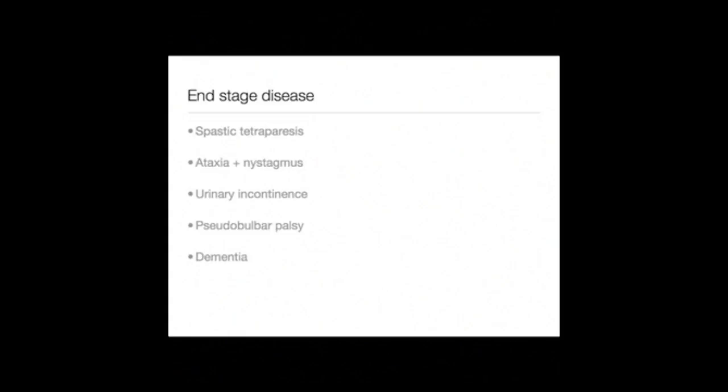In the patient with end-stage multiple sclerosis, there will often be a wide array of features corresponding with lesions in all of the already mentioned typical sites. Patients will have spastic tetraparesis, ataxia and nystagmus reflecting brainstem and cerebellar involvement, urinary incontinence, as well as pseudobulbar palsy. They also tend to develop dementia. Death in multiple sclerosis tends to result from uremia, often with bronchopneumonia.